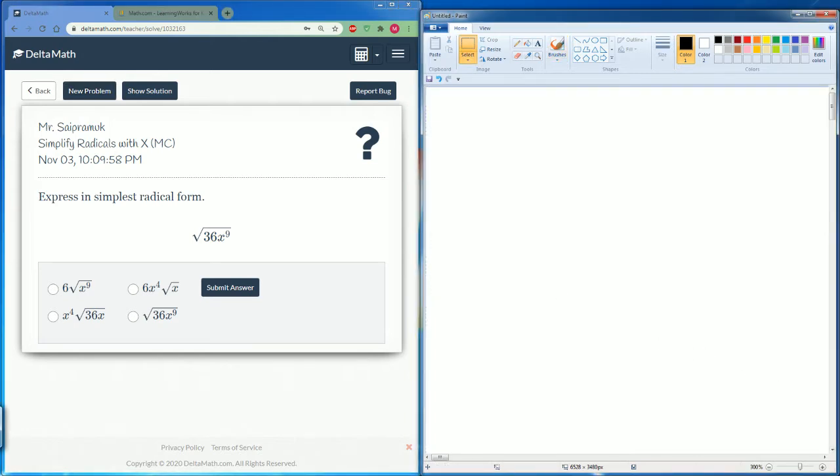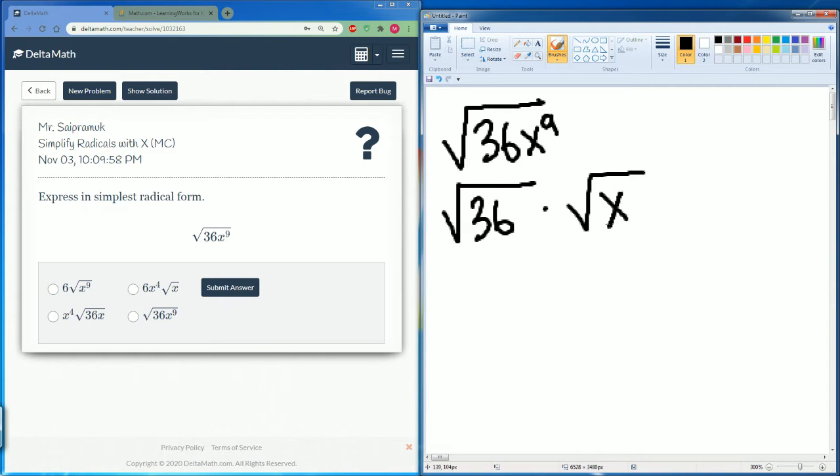Now we have square root of 36x to the ninth. We can know that radical 36 is just 6 times. Understand that the radical means the exponent is to the one-half power. This can be written as 9 divided by 2.